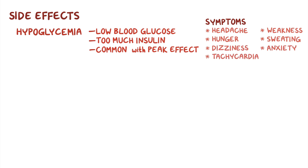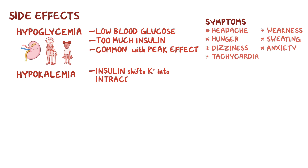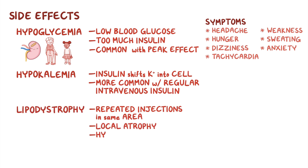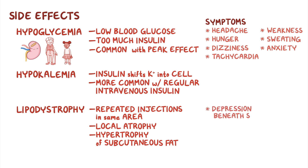It's important to note that individuals with renal impairment, the elderly, and children younger than seven years of age are at increased risk for hypoglycemia. In addition, these medications can also cause hypokalemia, since insulin shifts potassium into intracellular space, but this is more common with regular intravenous insulin. Repeated injections in the same area could cause lipodystrophy, which is a local atrophy or hypertrophy of subcutaneous fat near the injection area, causing a depression beneath the skin. This is why it's important to switch between injection sites frequently. Lastly, insulin can cause moderate weight gain.